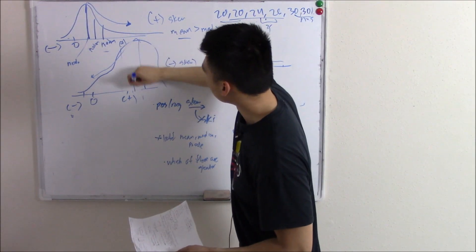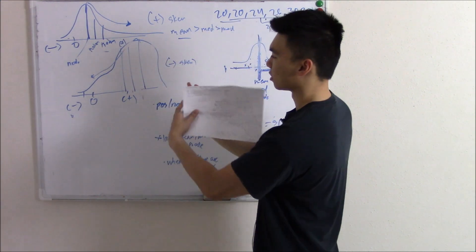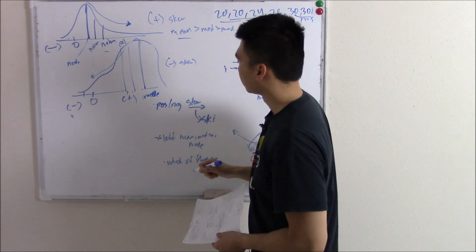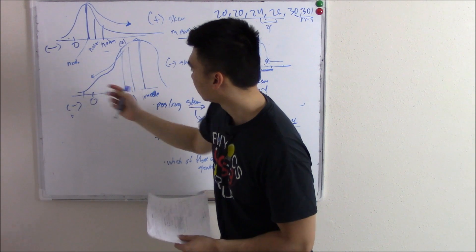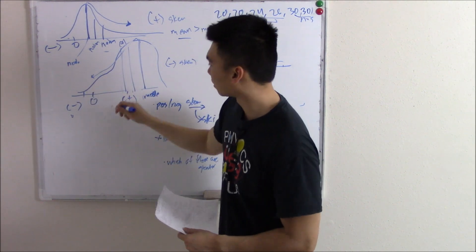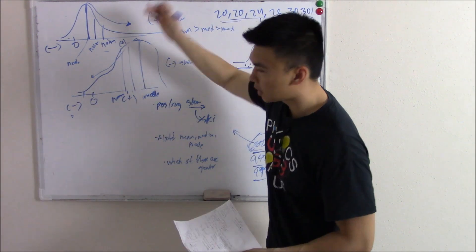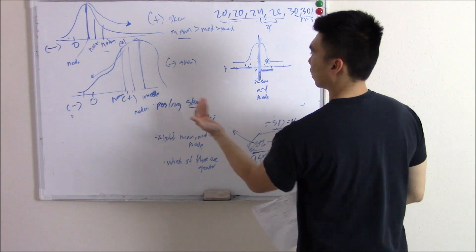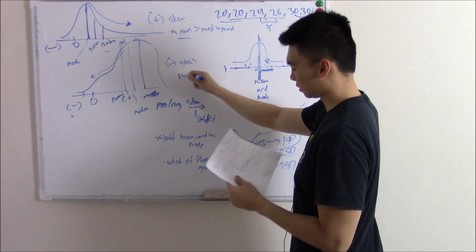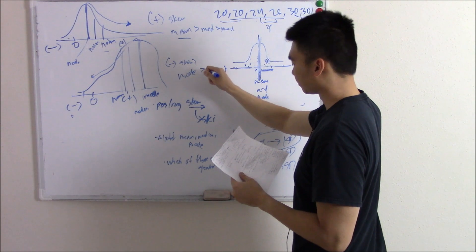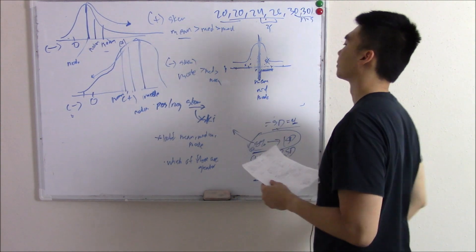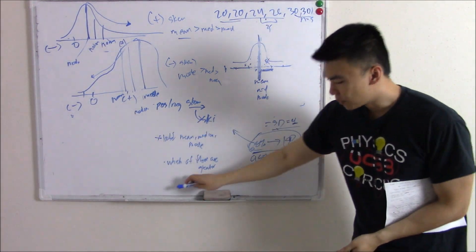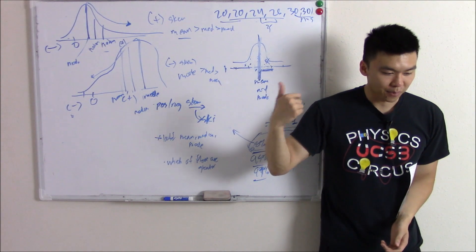In a negatively skewed graph, the mode is at the highest peak, the mean is pulled towards the negative tail, and the median is in the middle. So for a negatively skewed graph: mode > median > mean. Your mean is the most negative — the smallest number. That covers mean, median, mode, negatively and positively skewed graphs, and standard deviation.